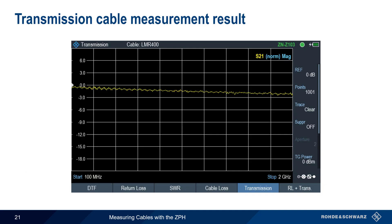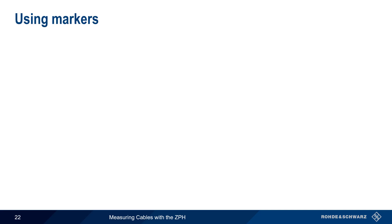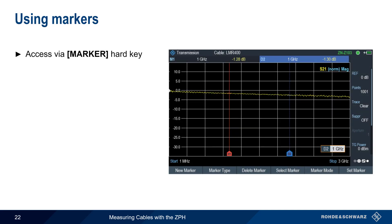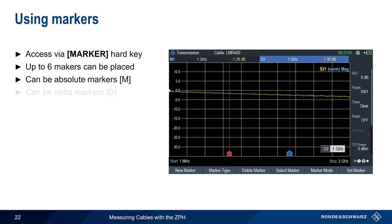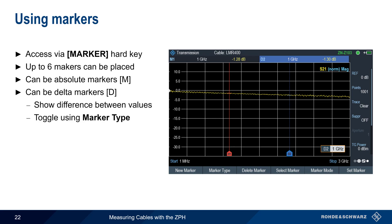Here is a typical transmission cable measurement result. As before, we see a plot of loss as a function of frequency. One of the ways this trace can be analyzed in more detail is by using markers. Markers are enabled using the Marker Hard key and can be used to examine the frequency-specific characteristics of a cable. Up to six markers can be placed on a trace, and these can either be absolute markers or delta markers, which show the difference between marker values. You can toggle between types using Marker Type. In this example, we've used a delta marker to determine the relative difference in cable loss between 1 GHz and 2 GHz, with the result being 1.3 dB.